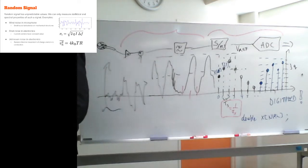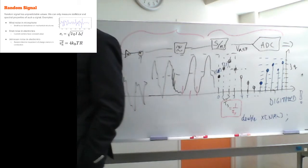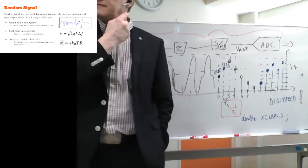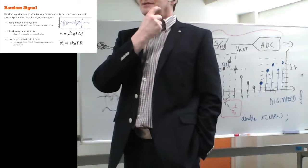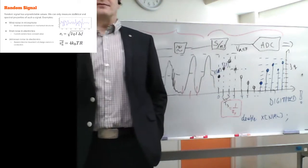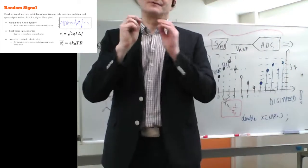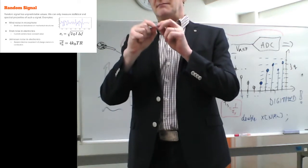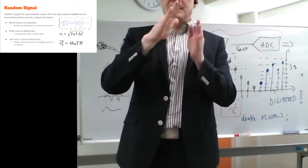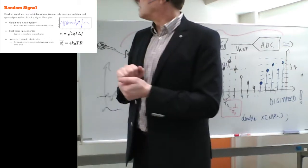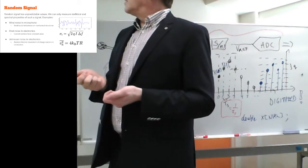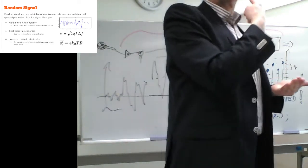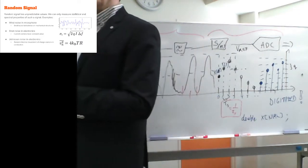Natural noise sources include wind noise in microphones. Engineers spend a lot of hours reducing wind noise in microphones — that's basically how you separate a good microphone from a poor one. A dynamic microphone itself is simple to make: a magnet and a coil glued into a membrane that vibrates when sound pressure hits it.